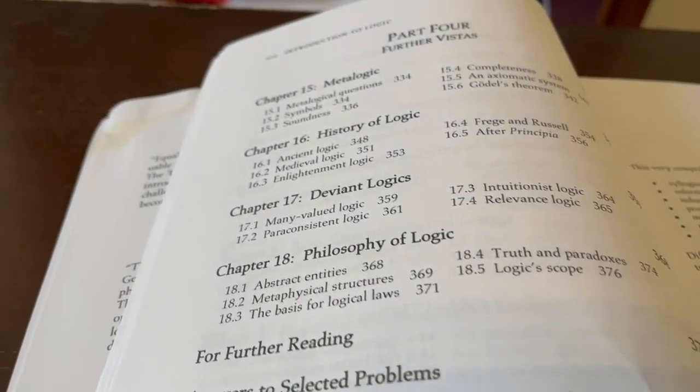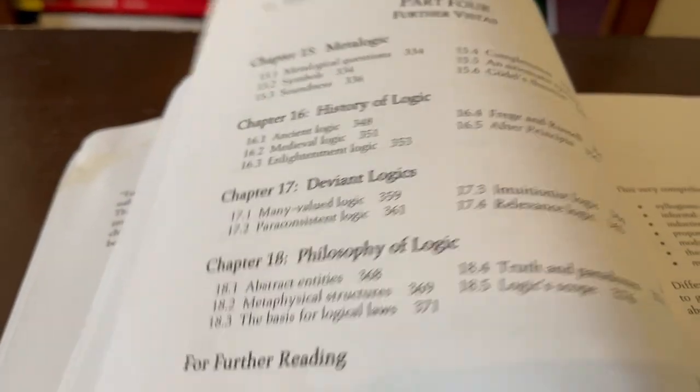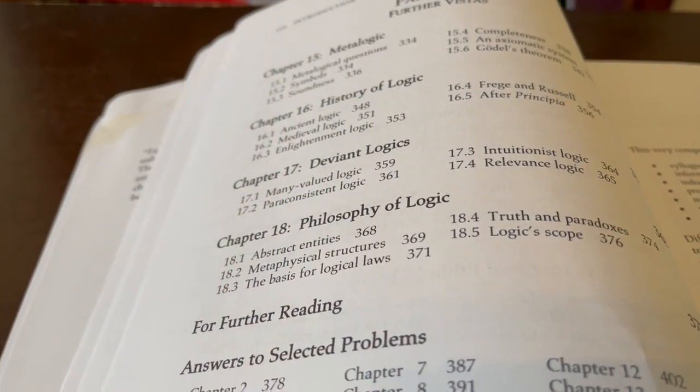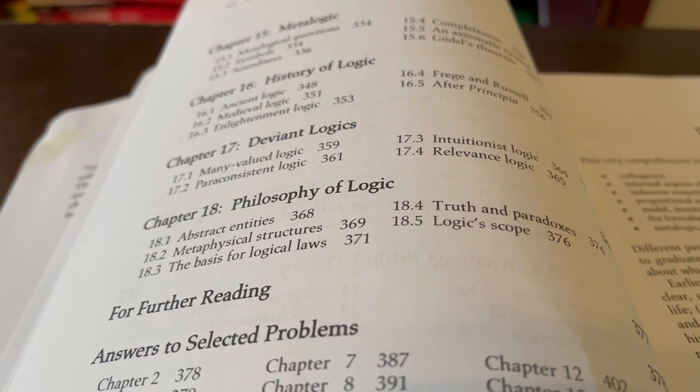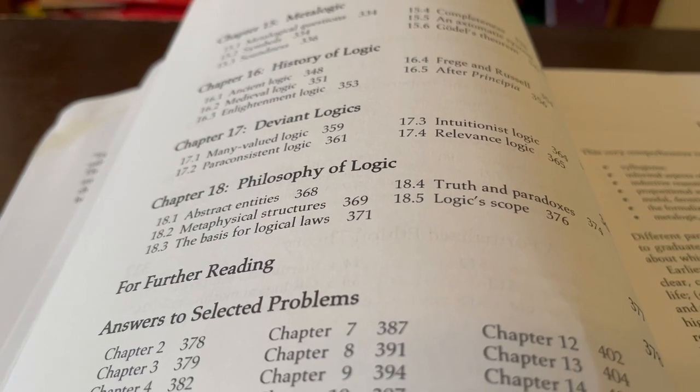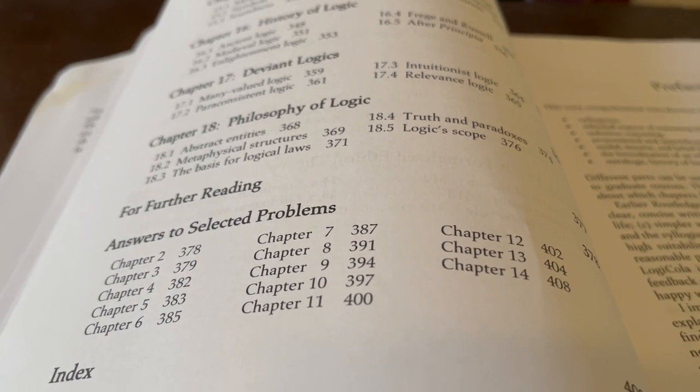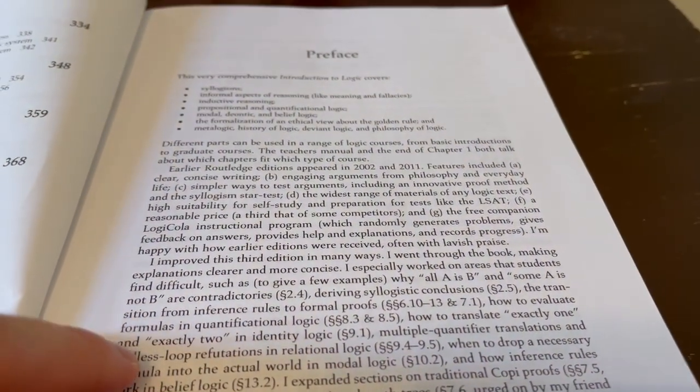Part four is on further vistas. Chapter 15, metalogic. Chapter 16, history of logic. And then we get into deviant logics like many-value logics or paraconsistent logic. Can we reject the law of contradiction, for instance? Chapter 18 is on the philosophy of logic. And like I said, there are many exercises and there are answers to some of them in the back. So you can check your work.